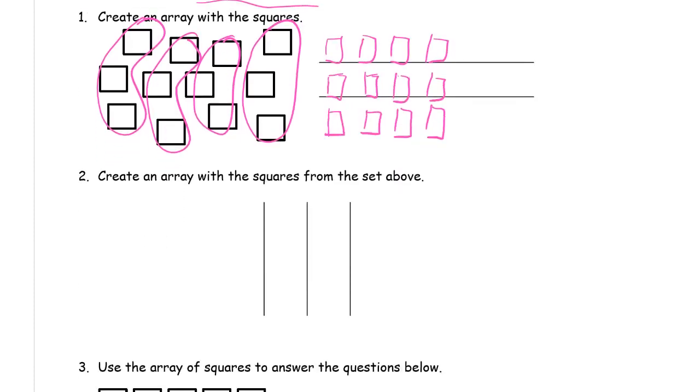And now an array with the same set of squares. So I've got 1, 2, 3. And I'm going to have, now I'm going to have rows of 4. I'm going to have columns of 4.